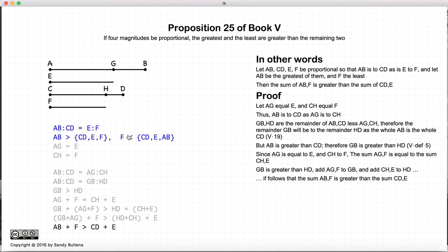So there we have shown, with these initial conditions, AB being the largest, F being the smallest, and we have AB to CD is equal to E to F, then the sum of the two extremes, the smallest and the largest, will be greater than the sum of the other two line segments.